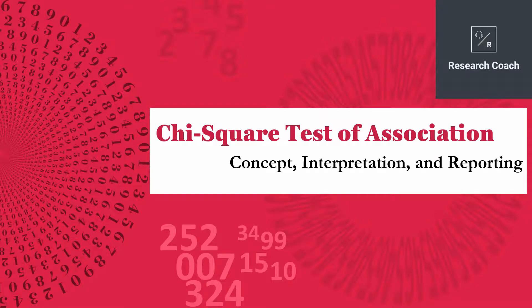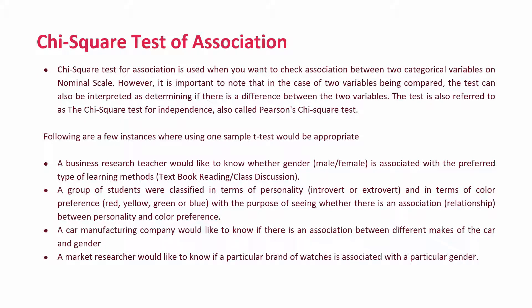We are going to look into the chi-square test of association — its concept, interpretation, and reporting. The chi-square test of association is used when you want to check the association between two categorical variables on a nominal scale. The two variables will not have any order and will just be used to categorize the respondents. It is important to note that the test can also be interpreted as determining if there is a difference between two variables.